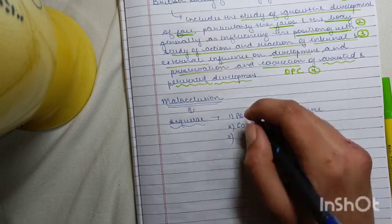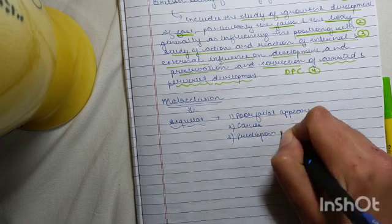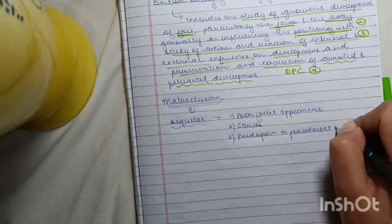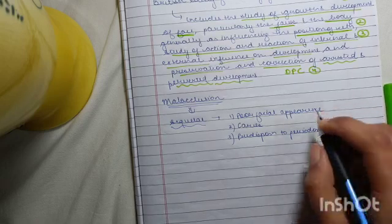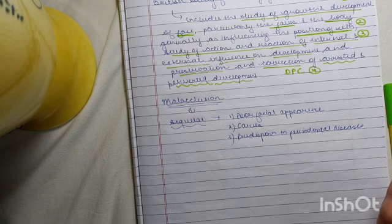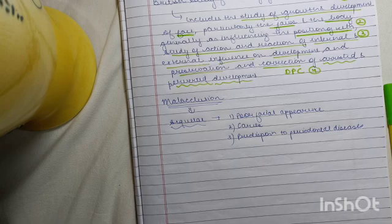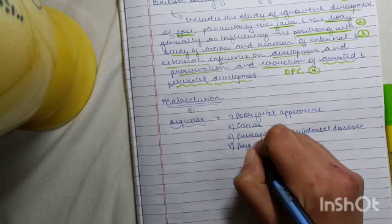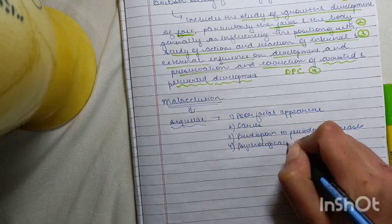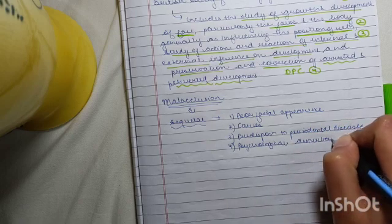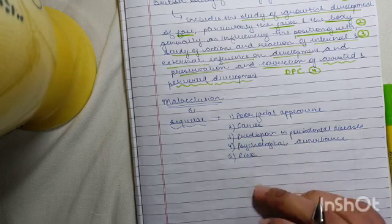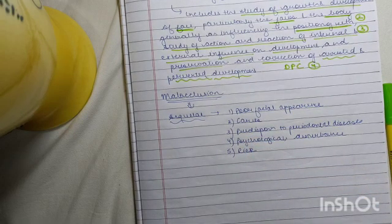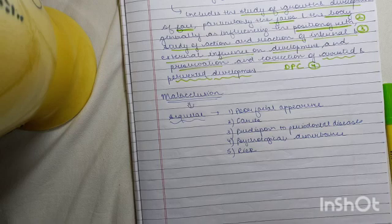Then there is predisposition to periodontal diseases. We will also do perio - I'll make videos on that too. To form a basic understanding, plaque is the basic local factor which leads to all the periodontal diseases. Whenever asked about a local factor for periodontal diseases, always answer dental plaque. Then, suppose a person is having poor facial appearance, so he will also have a psychologically disturbed state of mind or psychological disturbance. There is also a risk of trauma. Suppose a person has very proclined anteriors - proclined means towards the outer side in layman language. If a ball hits him, he is more prone to having injury on the upper anteriors. So risk to trauma.